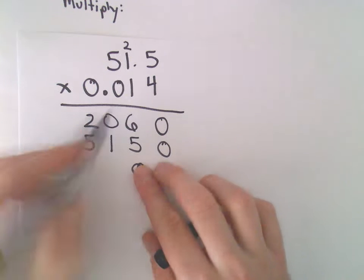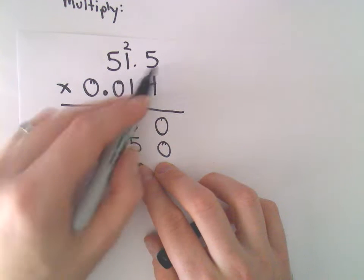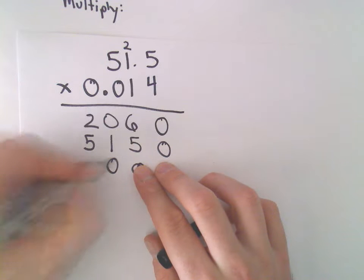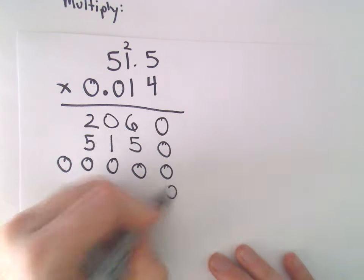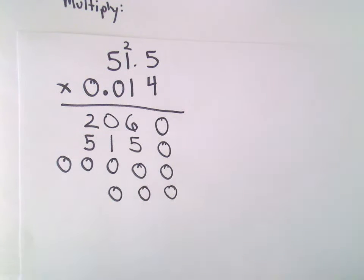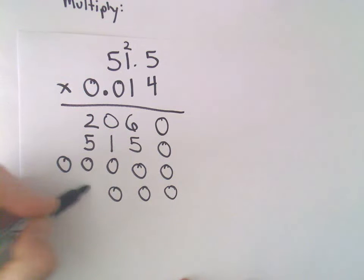Two 0s, and then if we multiply, we would just have 0 times 5, 1 and 5, which will be 0, 0 and 0. Then we can add in our next row. So this time we'll have three 0s, but again, if you multiply by 0, you'll just get a bunch of 0s.